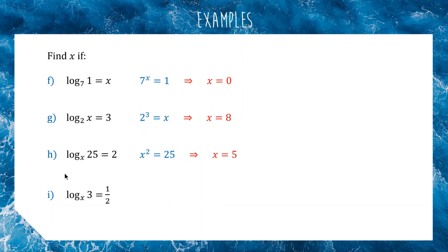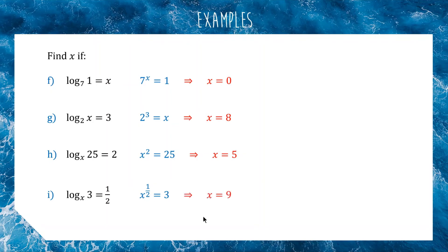For question I, we've got x to the power of a half equals 3. What number to the power of a half gets you an answer of 3? A power of a half is a square root, so what number, when you square root it, gives you 3? The answer is 9.